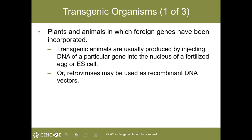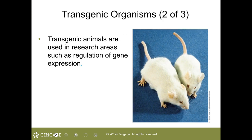With transgenic organisms, foreign genes have been incorporated into plants and animals. These animals are usually produced by injecting DNA of a particular gene into the nucleus of a fertilized egg or cell, and a retrovirus may be used as a DNA vector as well. The mouse on the right is normal, whereas the mouse on the left is transgenic and has rat growth hormone expressed in larger amounts.